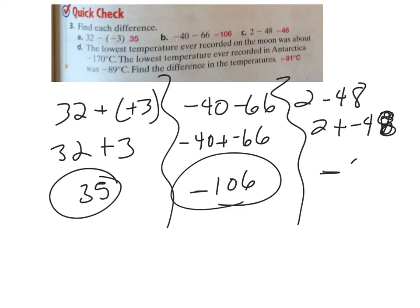And then D, the lowest temperature ever recorded on the moon - I wonder who went there for that - but anyway was about negative 170 degrees Celsius. The lowest temperature ever recorded in Antarctica was negative 89 degrees Celsius. What is the difference of temperatures? So we're going to set that one up.